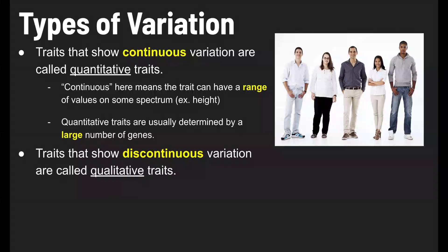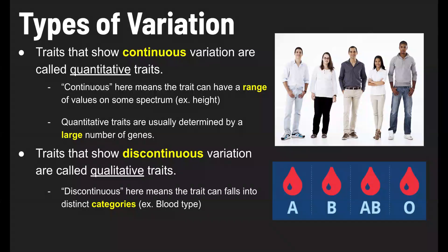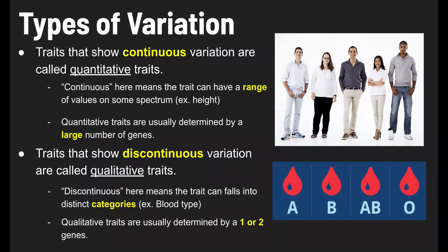Now let's talk about discontinuous variation. By discontinuous, I mean that the trait falls into distinct categories — it's not on a spectrum, there are just a few specific categories. An example would be blood type. There are only four blood types: type A, type B, type AB, and type O. We call these qualitative traits because you don't assign a value on a spectrum — you just assign a name to the category. Qualitative traits are usually determined by one or two genes.